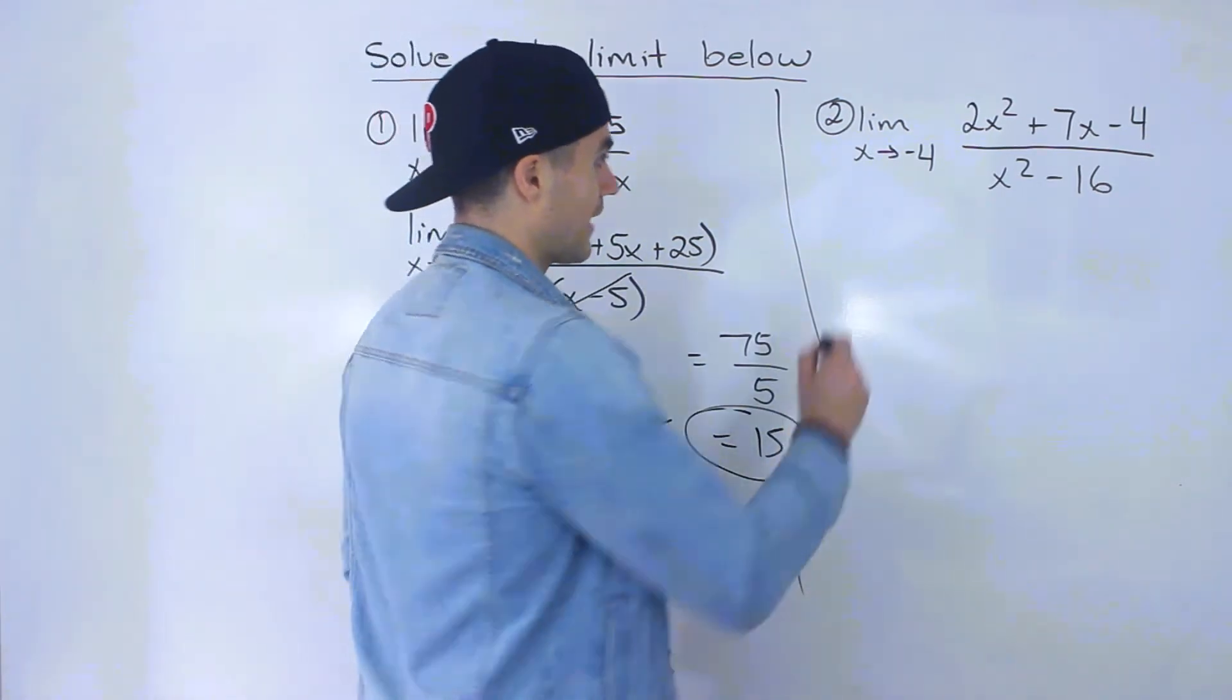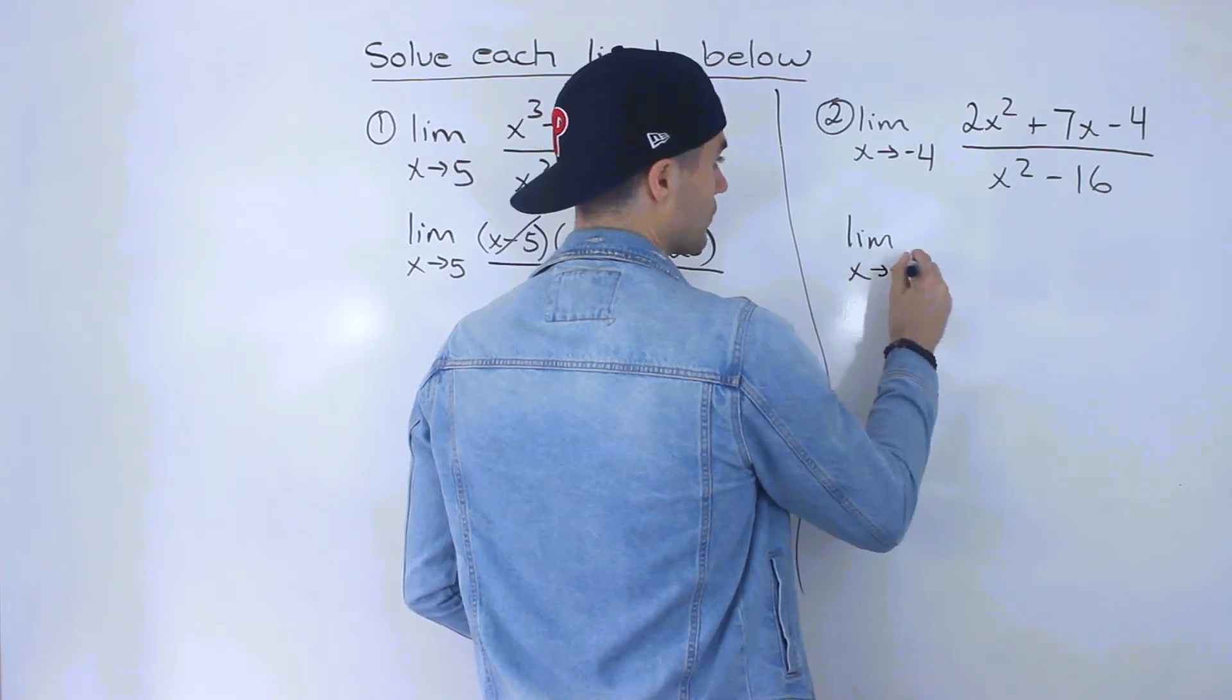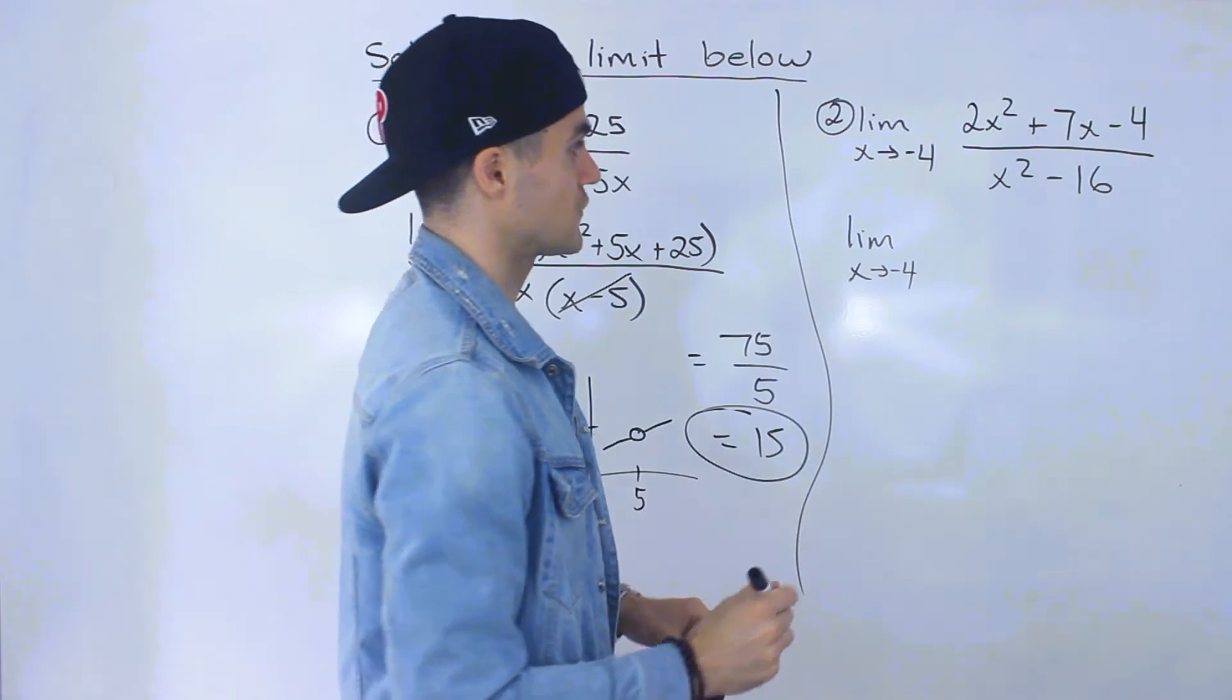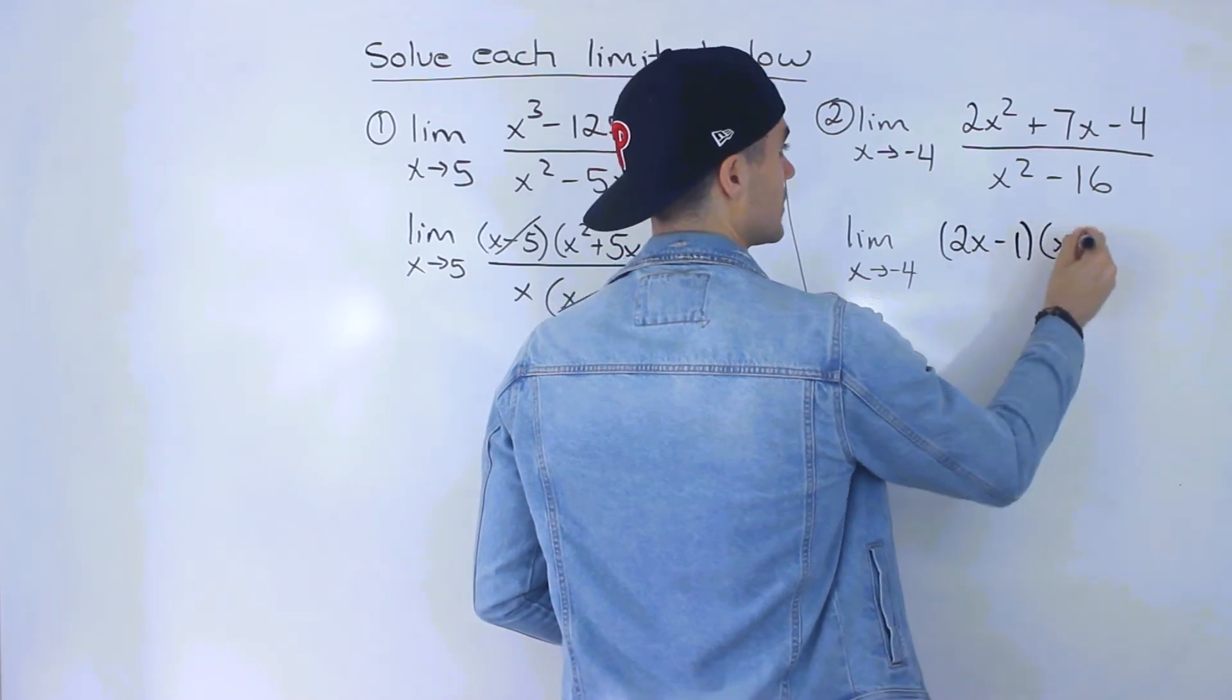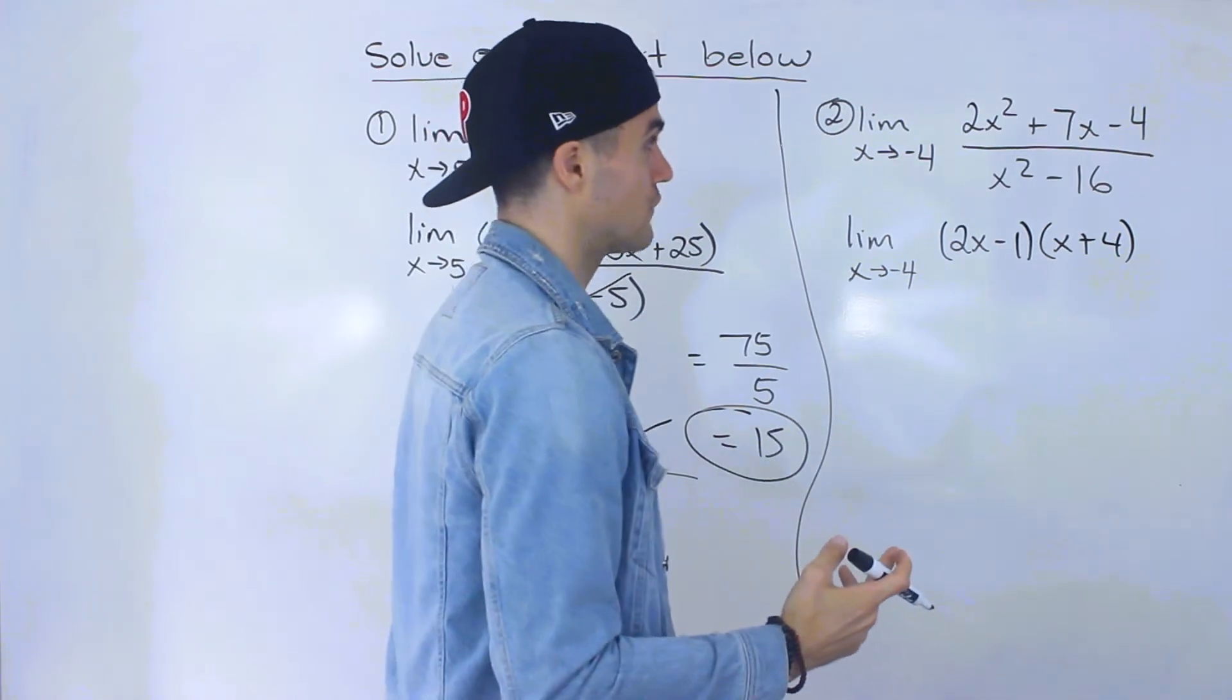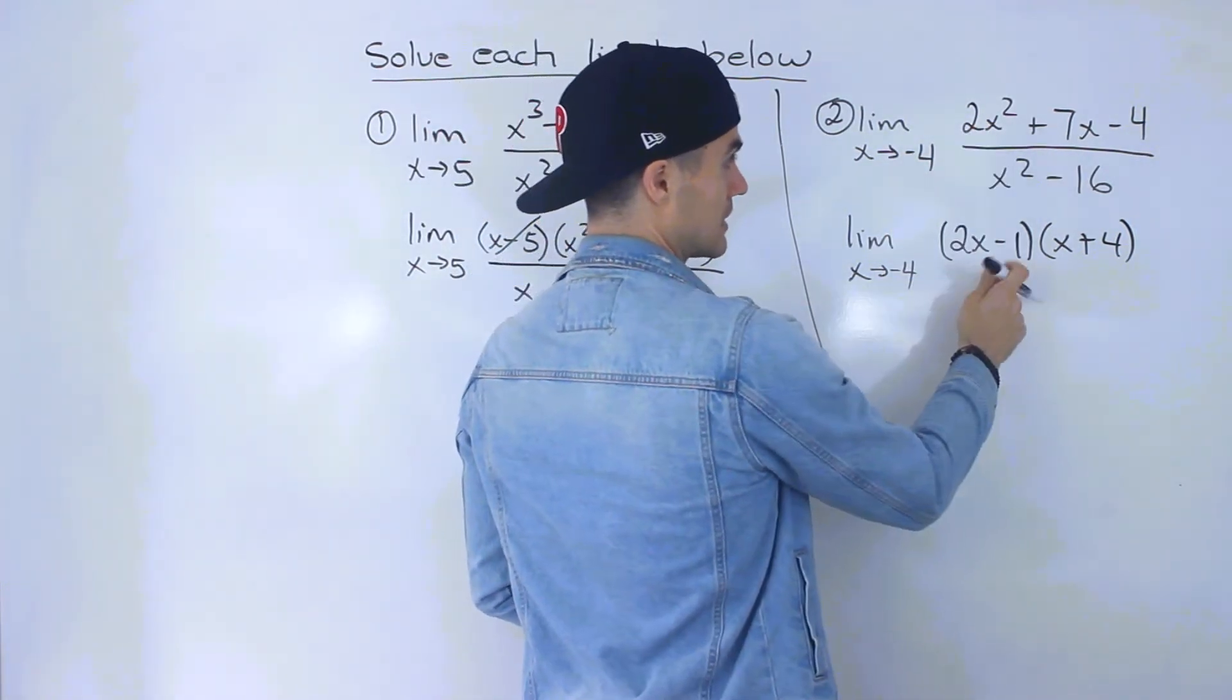So what we can do, though, is factor both the numerator and the denominator. 2x squared plus 7x minus 4, that is going to factor into 2x minus 1 times x plus 4. If you do decomposition or however you factor quadratics, the numerator factors into this.